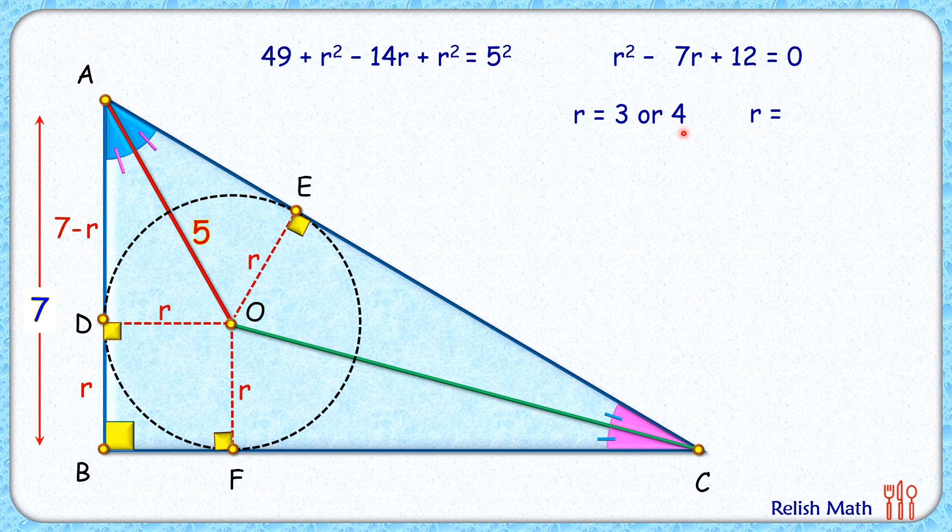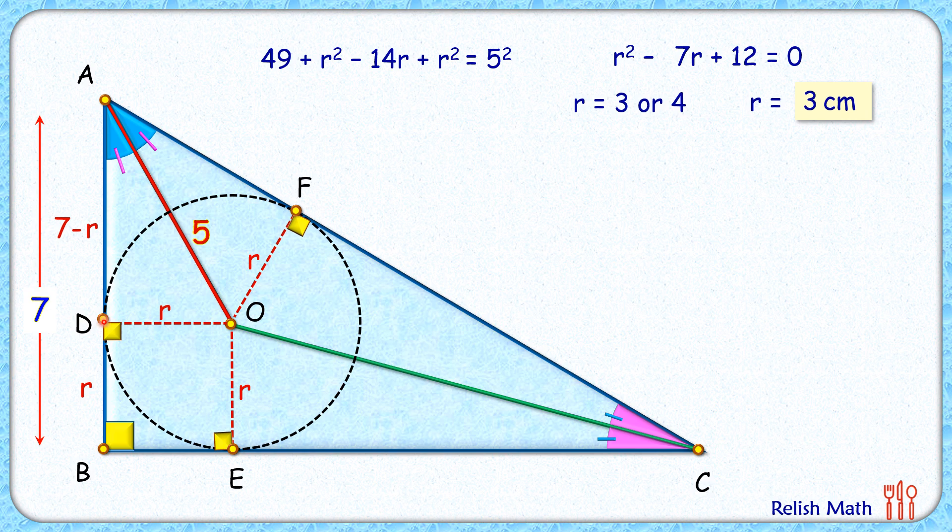So radius here is 3 centimeters. As radius is 3 centimeters, thus this length DB will be 3 centimeters, and length AD will be 7 - 3, or 4 centimeters. Now from external point A, two tangents are drawn, AD and AF. Thus they will be equal in length, or AF will be 4 centimeters.